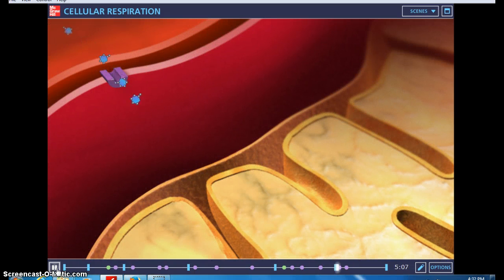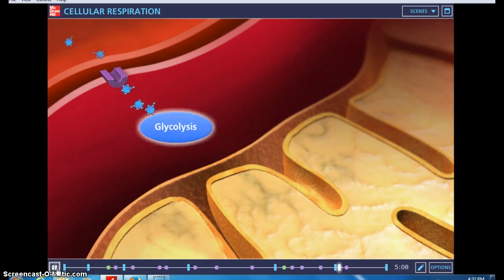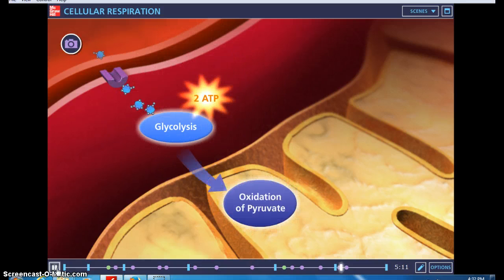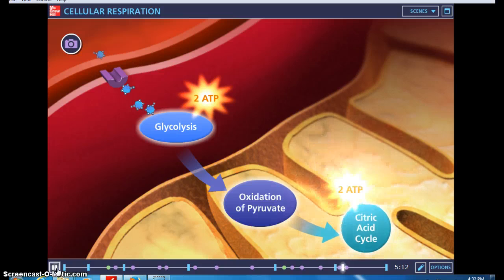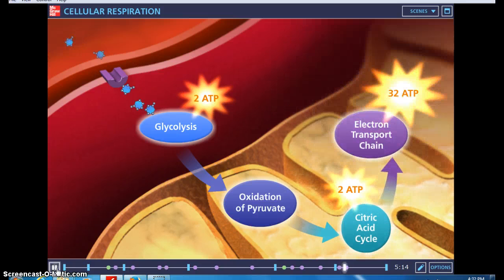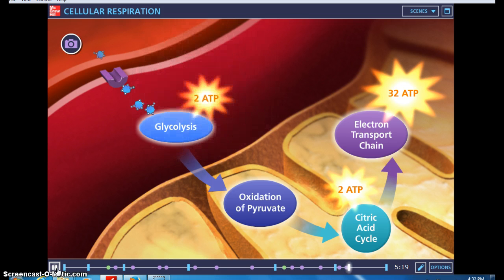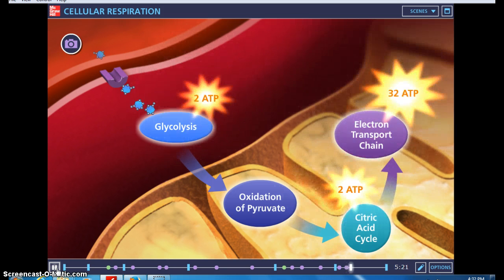In summary, we have seen how the four stages of cellular respiration are responsible for converting the energy found in the glucose molecule into ATP, the energy battery of the cell. On average, 36 ATP molecules are produced per glucose molecule that entered the cell.